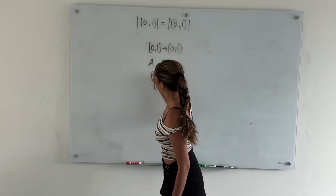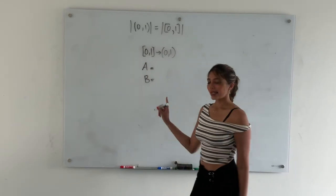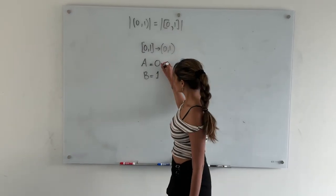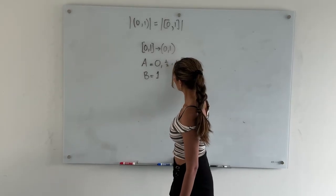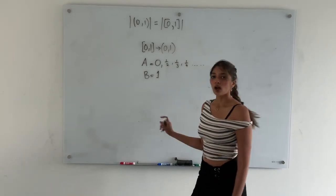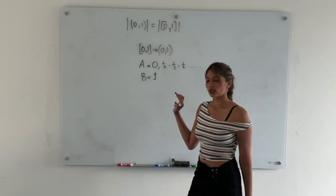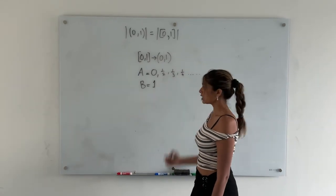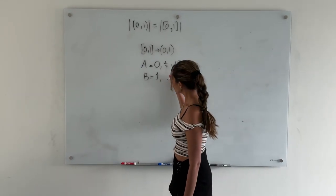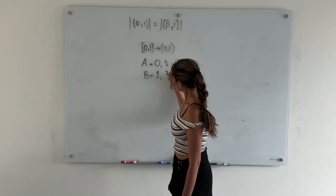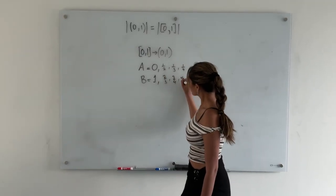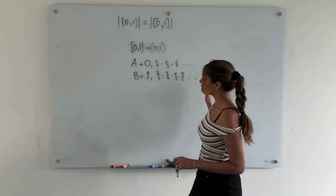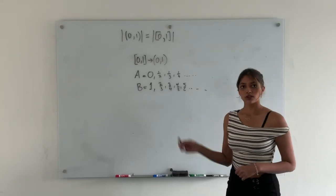Define sequence a, which includes 0, as: 0, 1/2, 1/3, 1/4, and so on. Note that since there's an infinite number of natural numbers, there's an infinite number of elements in this sequence, so there's always something after each element. Then define sequence b, which includes 1, as: 1, 2/3, 3/4, 4/5, 5/6, and so on. Again, same intuition — the sequence goes on to infinity.